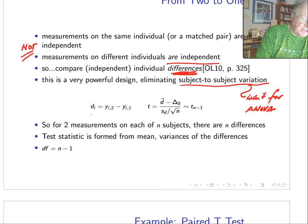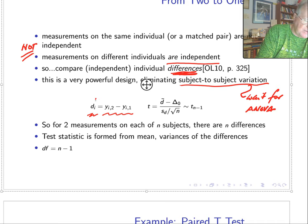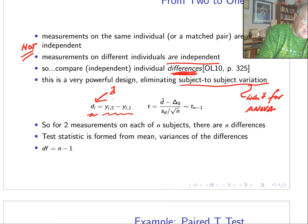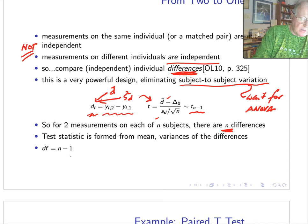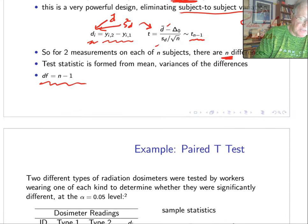But here's the procedure: for each subject i, we form a difference d_i. We then calculate statistics on d_i, basically the mean and sample variance. And then we conduct a single-sample t-test using the statistics on the differences. There's n differences, so this follows a t distribution with n minus one degrees of freedom. So for two measurements on each of n subjects—n differences—and the degrees of freedom is n minus one. Let's look at an example.